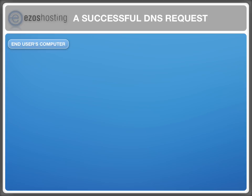Let's say we open our browser like Microsoft Internet Explorer, Firefox, Opera, or Safari and enter example.biz in the navigation bar. Within a couple of seconds the page will appear on your computer screen. But how does your computer know how it gets to the IP address of example.biz?